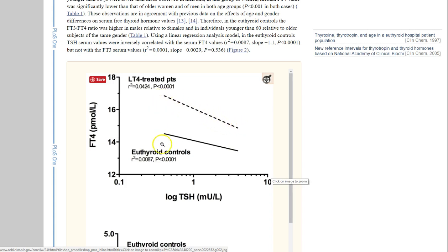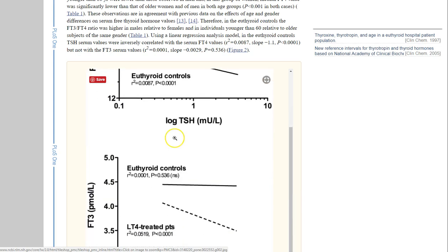But as we give them more T4, we would expect it to go up and their TSH to go down, and that's exactly what we see. So, not necessarily a problem there. And if we look at these values, the free T4 is higher in the patients who don't have a thyroid than those who do have a thyroid, which is kind of strange.